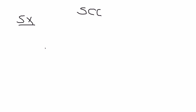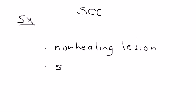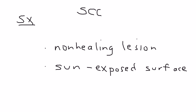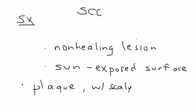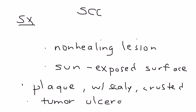The first thing you look for is a non-healing lesion. Another key factor is that the lesion appears on a part of the body that has exposure to the sun. In terms of appearance, it's variable, but it can be described as a plaque, sometimes with scales — scaly or crusted. Eventually the tumor, or skin lesion, ulcerates and invades the underlying tissue.